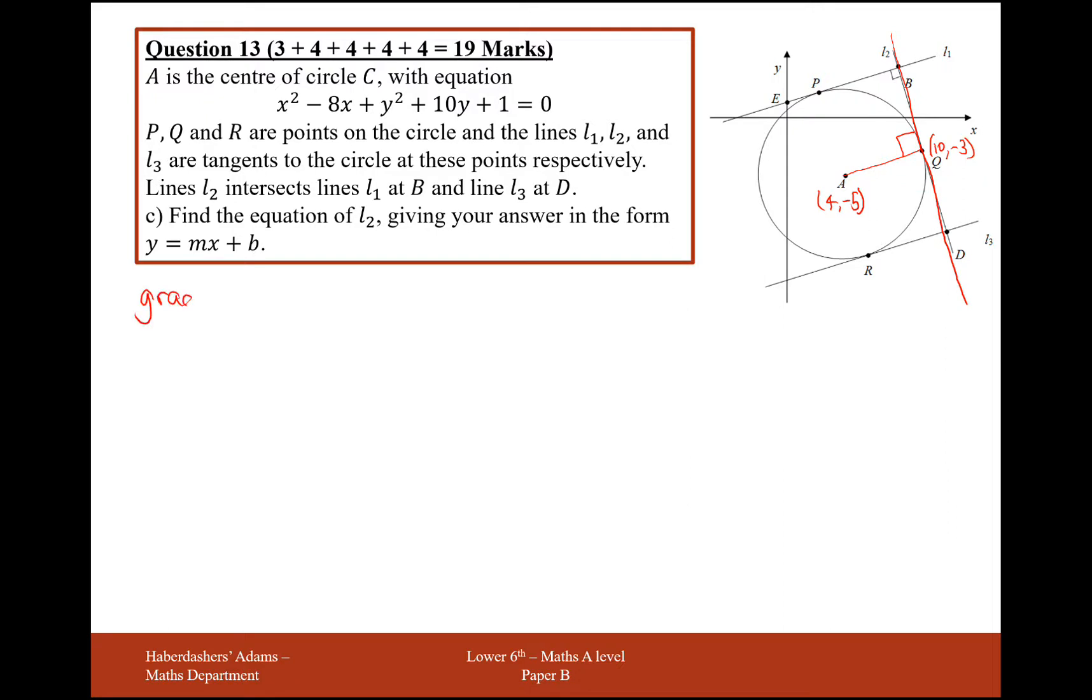What I need to work out first is the gradient of AQ. So gradient is change in y over change in x. So if I'm going from A to Q, minus 5 up to minus 3, that's going to be plus 2. And if we're going from 4 up to 10 for the x values, that's going to be 6 on the bottom. So the gradient here is 1 third. And then for the gradient of L2, we do the whole trick of minus 1 over the other gradient, which is a third. So this is going to be minus 3.